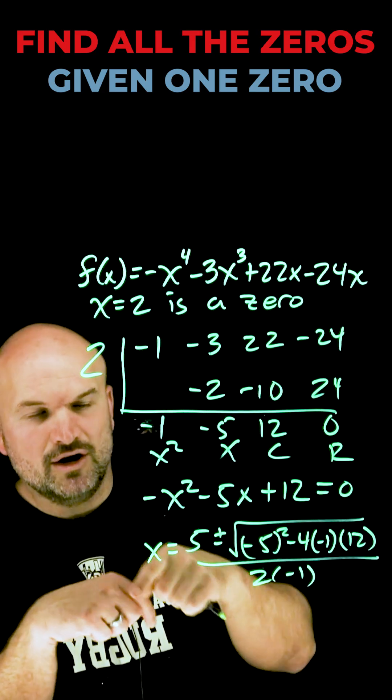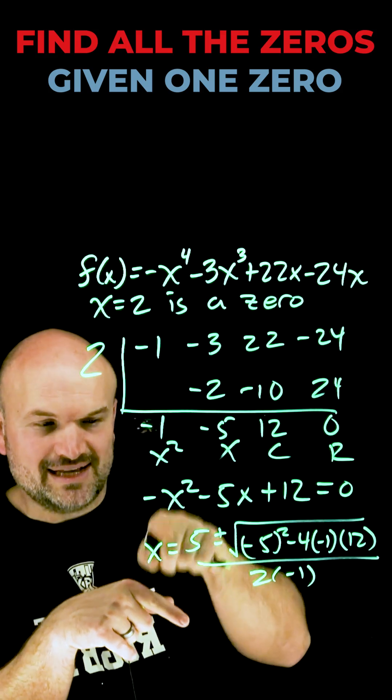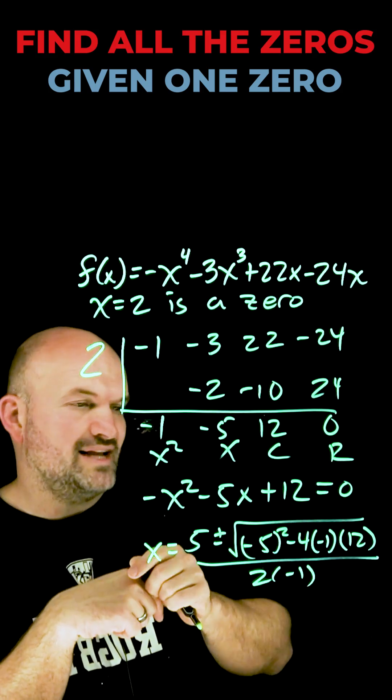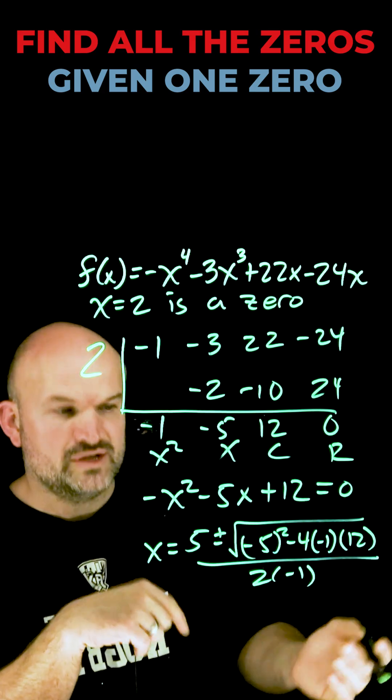All right so now we just need to do some simplifying. Remember it's opposite of B, so since that's a negative that's why that's a positive. Negative 5 squared is 25. Negative 4 times negative 1 is positive 4, times 12 is going to be 48.